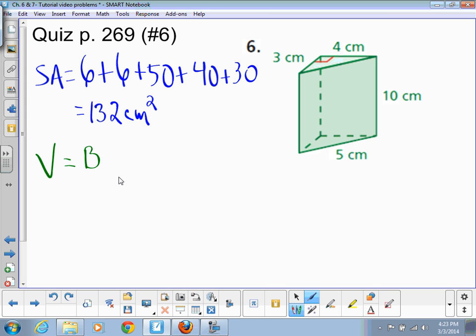Well, what is the base? It's a triangle. It's a triangular prism, therefore the base is a triangle. That's why it's called a triangular prism. So we already calculated the area of the base right here - 6.